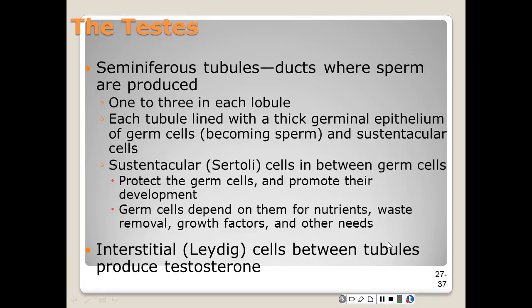The seminiferous tubule has a narrow lumen lined by a thick germinal epithelium. This epithelium consists of several layers of germ cells in the process of becoming sperm, and a smaller number of tall nurse cells — also called Sertoli cells — that protect the germ cells and promote their development.